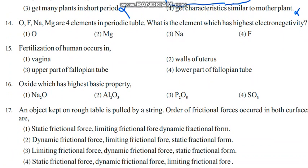Oxygen, fluorine, sodium, magnesium are four elements in the periodic table. What is the element which has highest electronegativity? That is fluorine. Fluorine is the element with the highest electronegativity. Acidity - fertilization of human occurs in the fallopian tube, in the middle part, so you can take around lower part of fallopian tube where fertilization will occur.